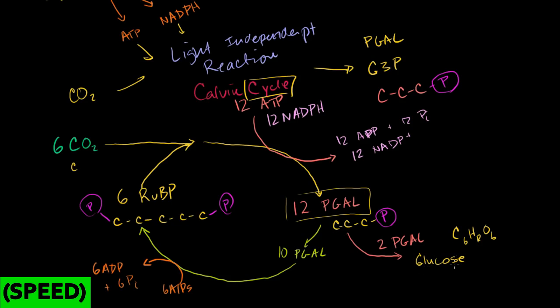But it's important to remember that it doesn't have to just be glucose. It can then go off and generate longer-chain carbohydrates and starches, anything that has a carbon backbone. So this is it.